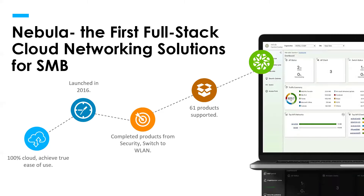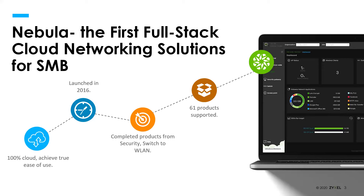Nebula was the first full-stack cloud networking solution for SMB. Cloud networking has to do with cloud management — instead of having to directly go into your hardware to manage it, set up VPN or port forwards to get access to it, you simply go to a web page to see and manage your products. Full stack means switches, access points, and security gateways — the three core components of a typical SMB network.